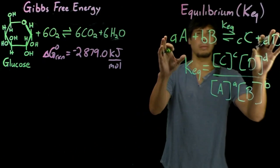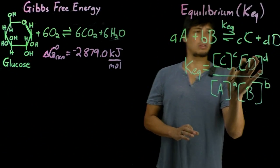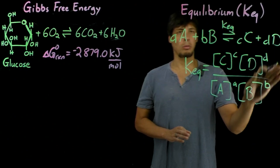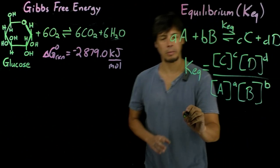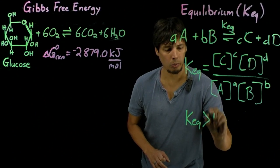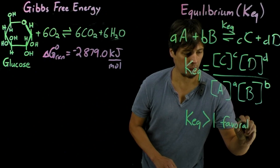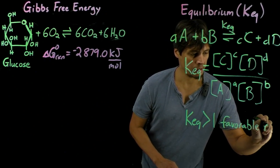So that means if the reaction, if the equilibrium is product-favored, that means the numerator will be much larger than the denominator. So Keq will be greater than one for a favorable reaction.